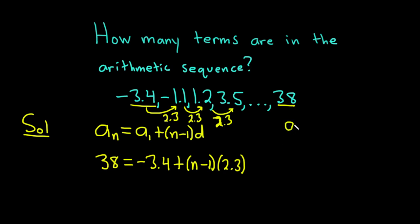Just to recap, just to make sure you're following, a sub n was 38. That's the nth term or the last term in this case. A sub 1 is the first term. So that was negative 3.4. And d is the common difference. That was 2.3. We plug that into our formula for the nth term or general term. And now we're going to solve for n.